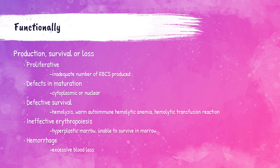We also evaluate anemias based on the functionality of the red blood cells. Are there just not enough red cells being produced for the body to function properly? Are there defects in the maturation of the red blood cell, or defects that lead to decreased survivability of that red blood cell? Is the body hemorrhaging — bleeding excessively — and the bone marrow just can't keep up with the loss? Or is the bone marrow just being ineffective at producing red blood cells? All of these factors lead the physician to make a diagnosis on what type of anemia the patient has.